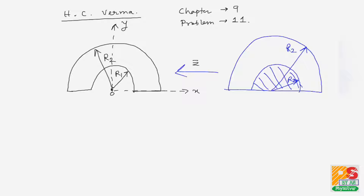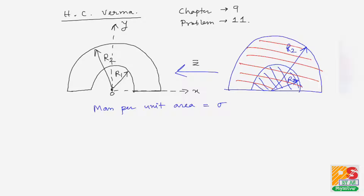Suppose the mass per unit area — the area mass density — is sigma. This is a uniform disk. The mass of the entire semi-circular disk, m0, is sigma times π·r2² divided by 2, that is σπr2²/2. For a semi-circular disk, the position of the center of mass lies on the symmetrical axis at a distance of 4r/3π.